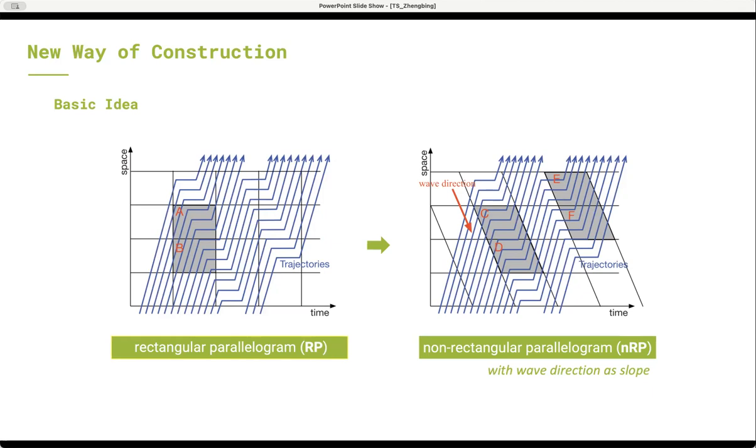Generally speaking, NRP cells have more chances to contain complete stop-and-go processes as well as homogeneous traffic. Although a stop-and-go process may not be completely captured by an NRP cell limited by its width, the traffic contained by the spatial neighbor NRP cells are more likely similar. It means that the NRP cells are beneficial to capturing similar traffic waves.